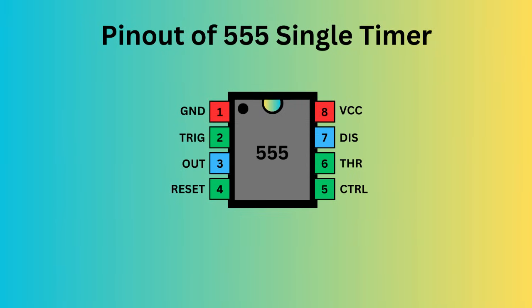The 555 timer IC comes with eight pins. There is a notch or a dot on the chip's body. Pin 1, located at the top left, serves as the ground supply. Pin 2, the trigger pin, initiates the timing interval in monostable and astable modes.